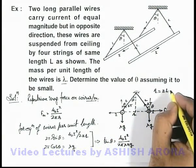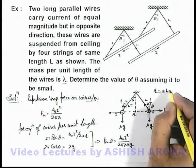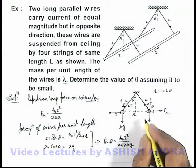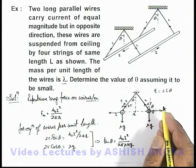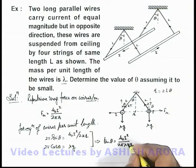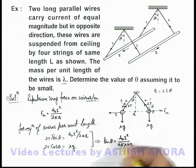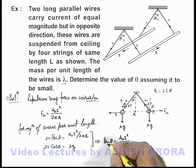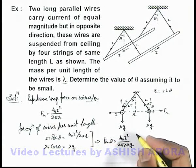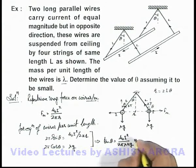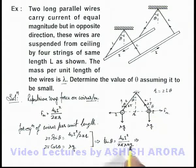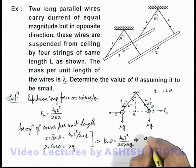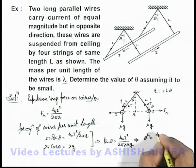Or sin theta we can approximate as theta only, so it can be written as 2L theta. Now in this situation, if we substitute the value of r as 2L theta, and tan theta we can also substitute approximately equal to theta, theta can be taken on the left hand side, so this will become theta squared is equal to mu naught i squared divided by...